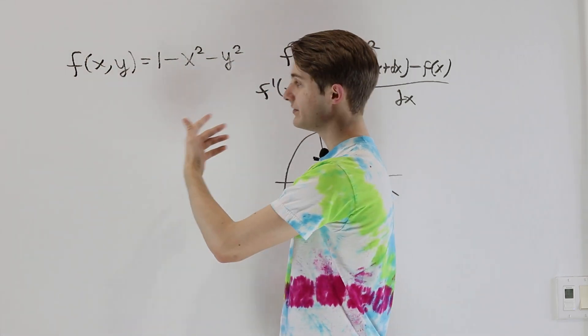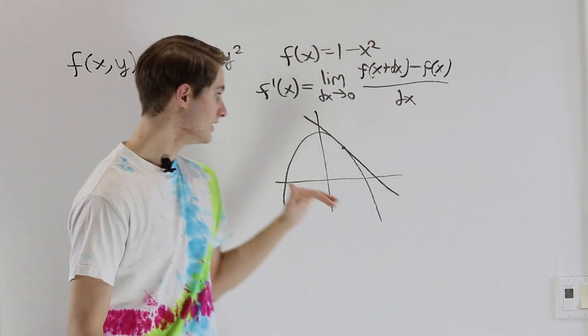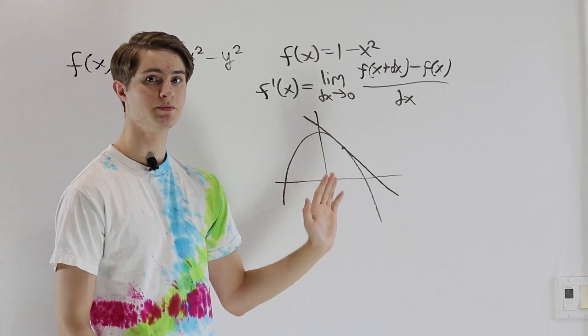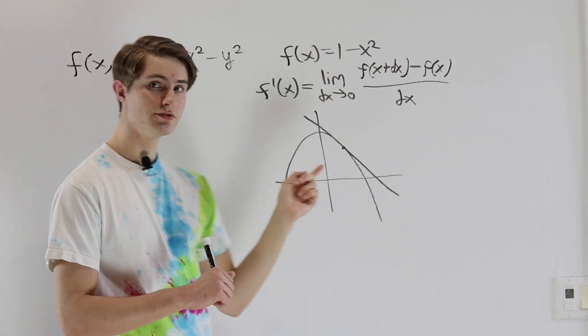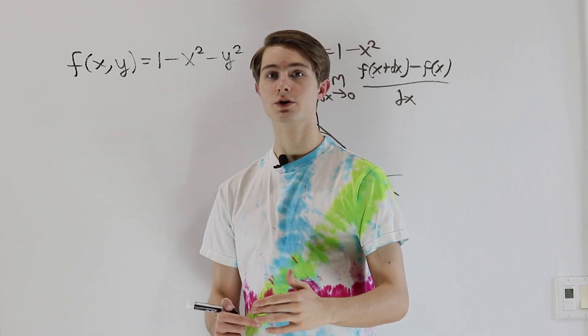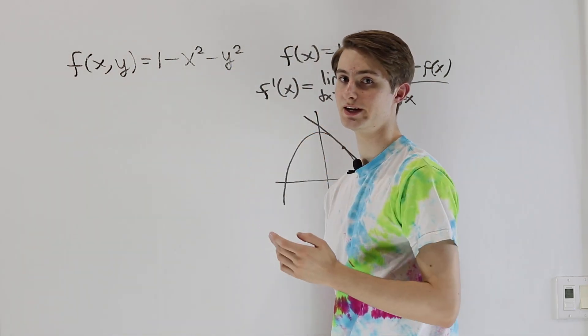But if we think about f of x, y equals 1 minus x squared minus y squared, there's not just a one dimensional range of values, there's a two dimensional range. So if we want to take our single variable derivative and make it two variables in a way that makes sense, we're going to have to pick a line and say we're only looking at changes along that particular line.